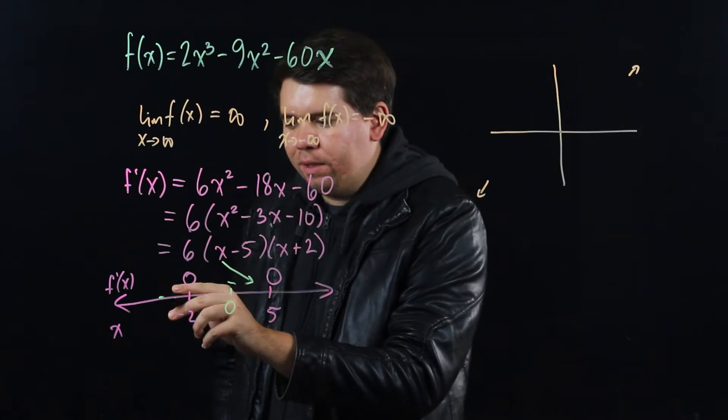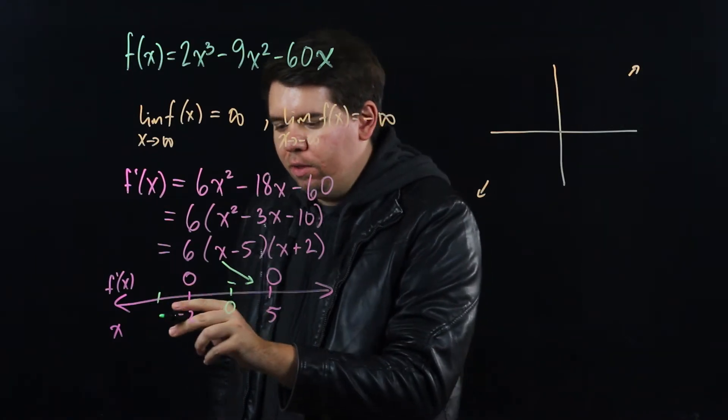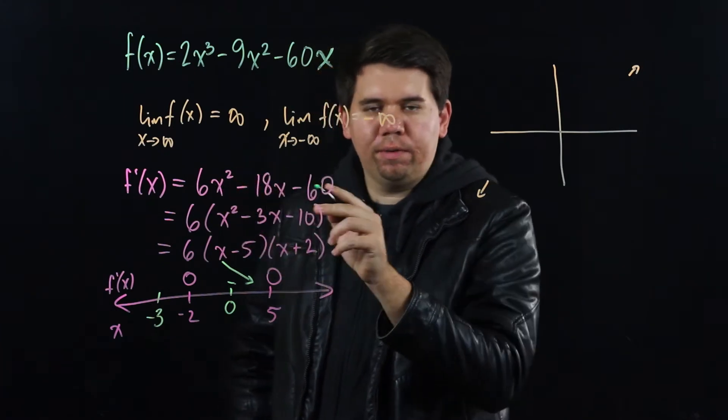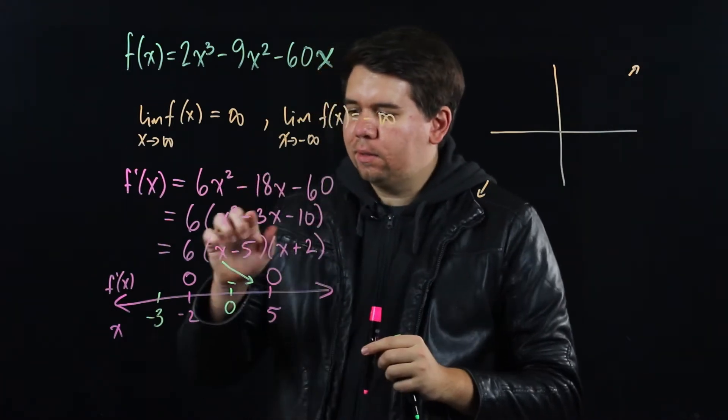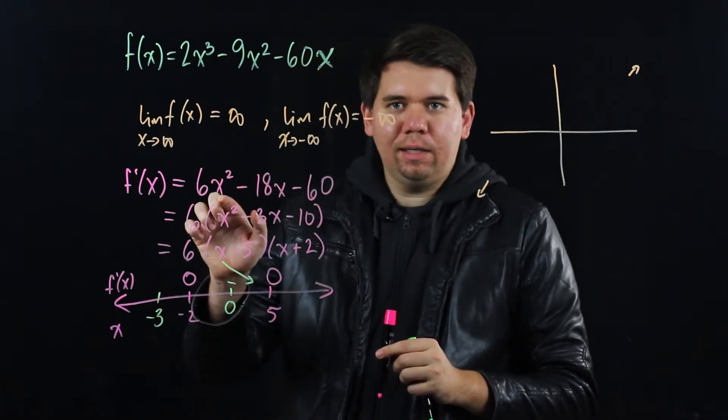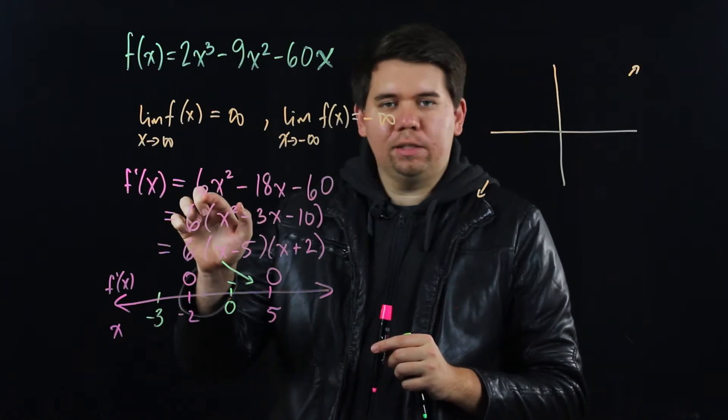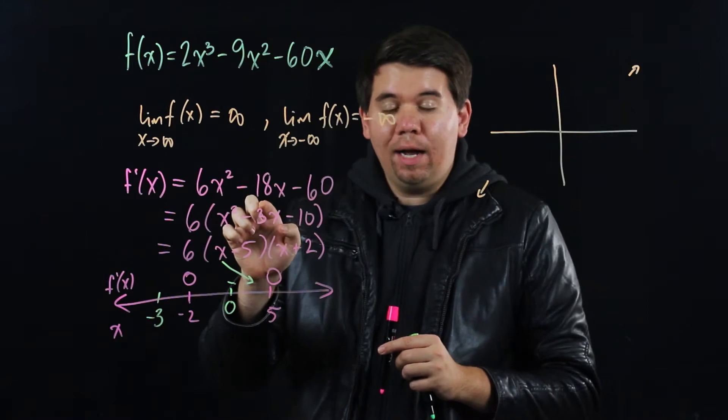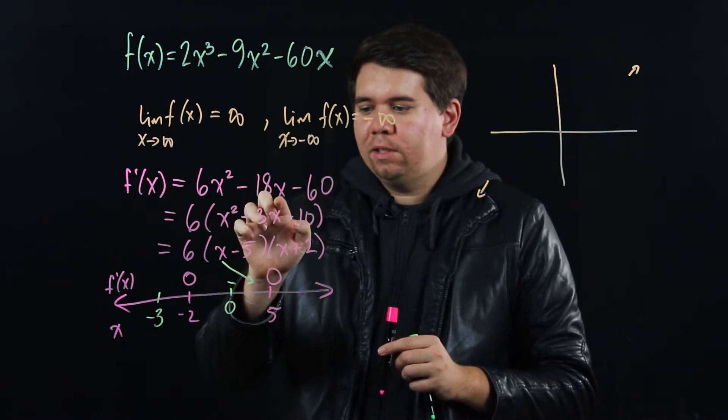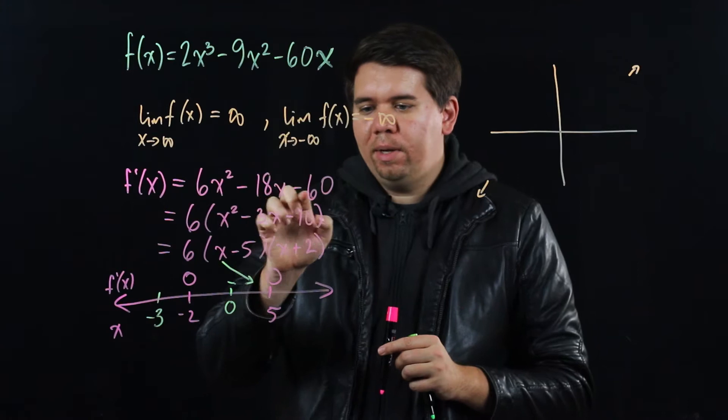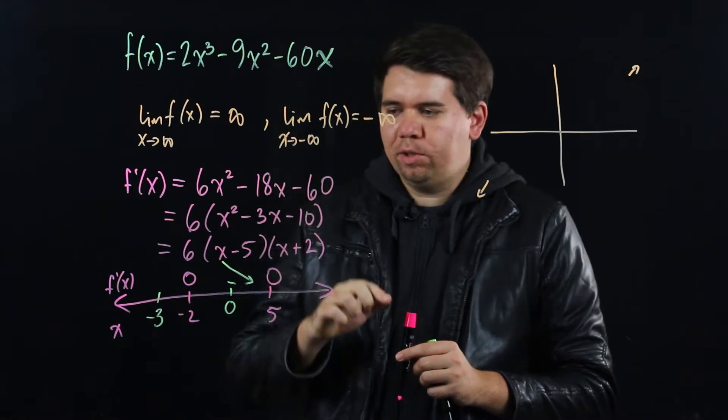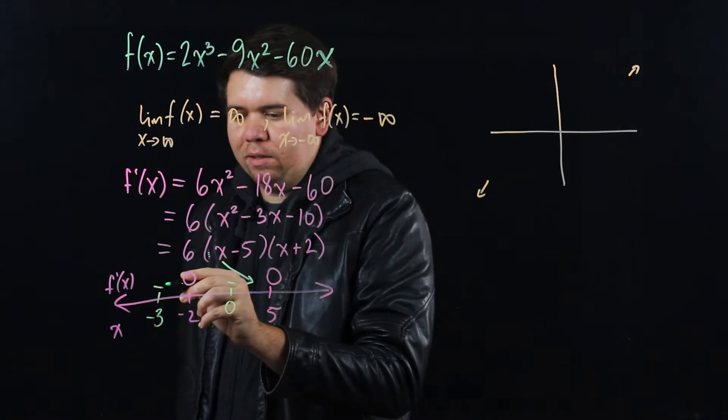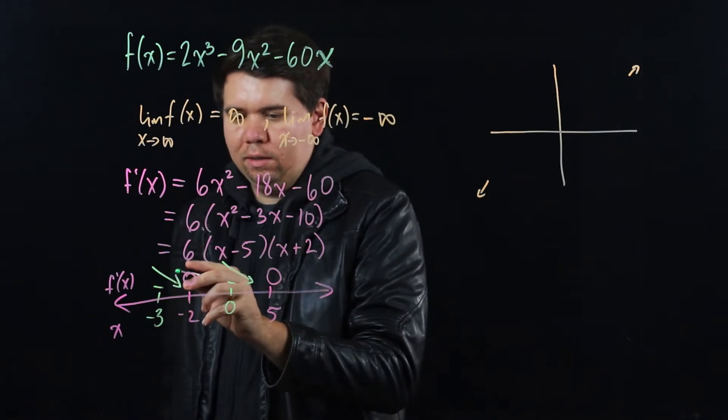Pick some points to the left, some points smaller than minus 2, like minus 3. Plug that into your derivative. Minus 3 squared is 9 times 6 is 54. Minus 3 times minus 18 is a positive 54, and so those are going to cancel, but it ends up being negative. You subtract the 60, so you get negative, and so that means the function is still decreasing.